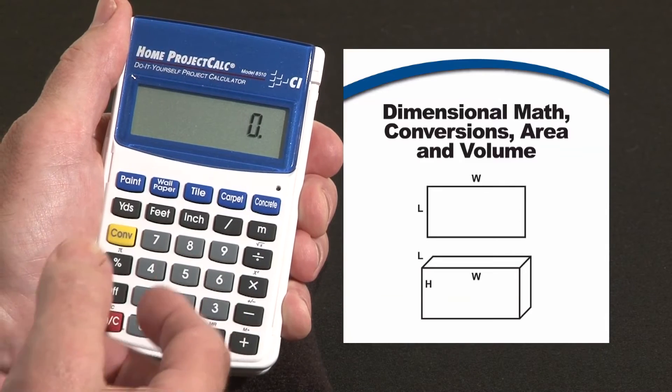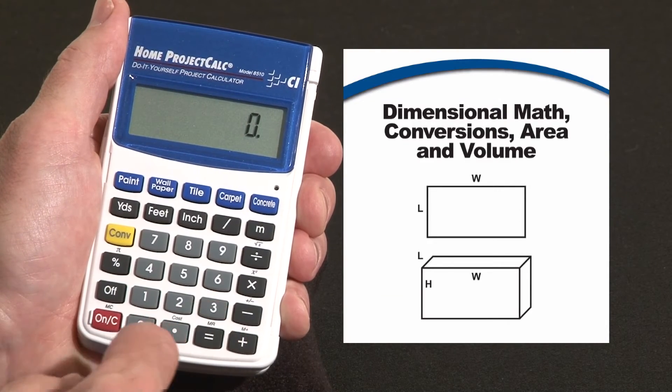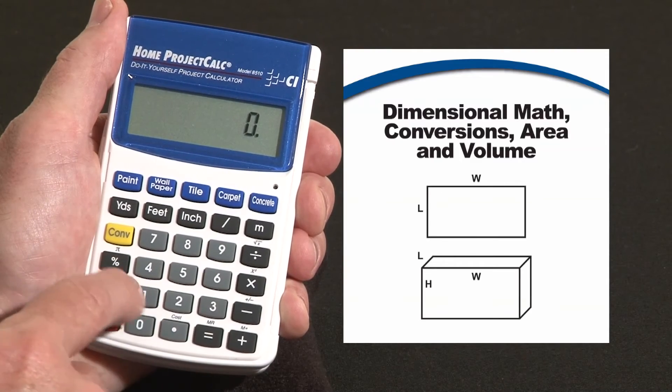You can also enter, if you know the square footage or cubic volume you're going to work with, you can enter it directly. You don't have to calculate it. So if you had a ten by ten patio, you know that's a hundred square feet.